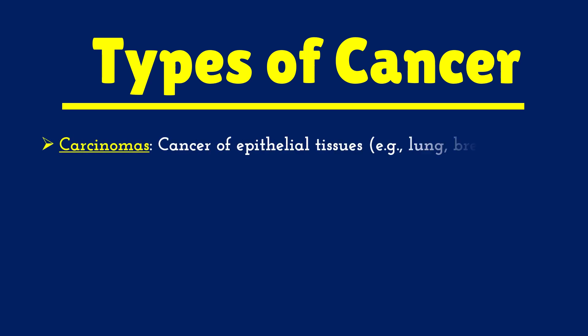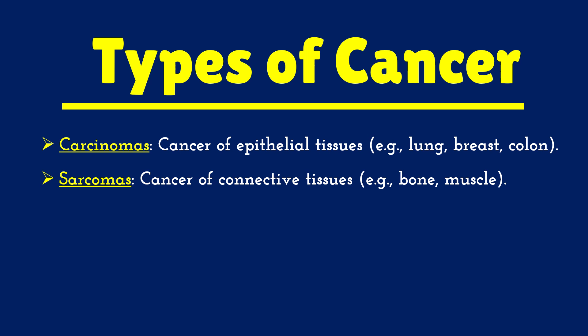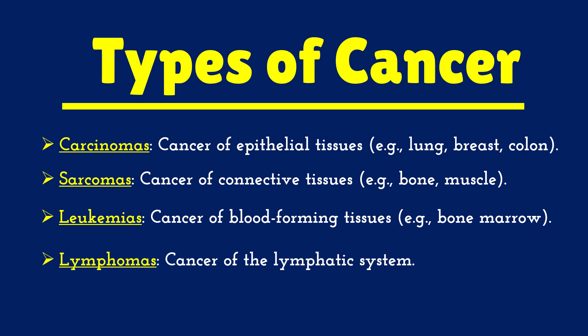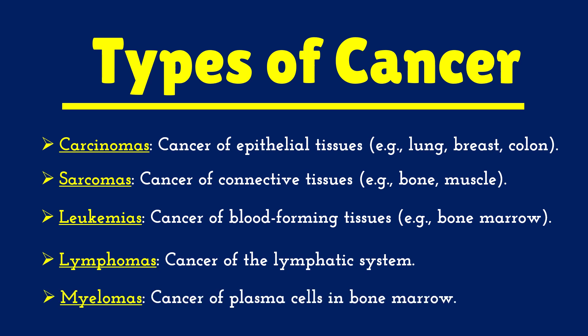The types of cancer: first, carcinomas, which are cancers of epithelial tissues like lung cancer, breast cancer, and colon cancer. Second, sarcomas, which are cancers of connective tissue such as bone cancer and muscle cancer. Then leukemia, which is cancer of blood-forming tissue, that is bone marrow. Then lymphomas, which is cancer of the lymphatic system, and myelomas, the cancer of plasma cells in the bone marrow.